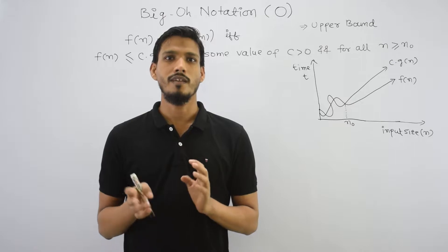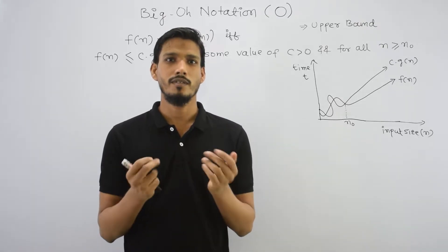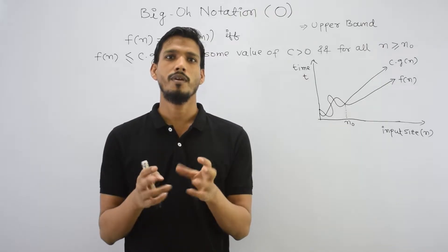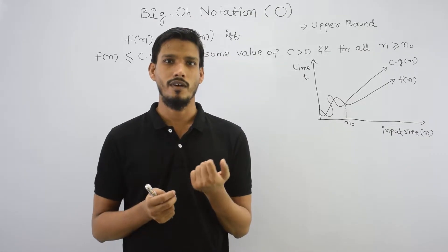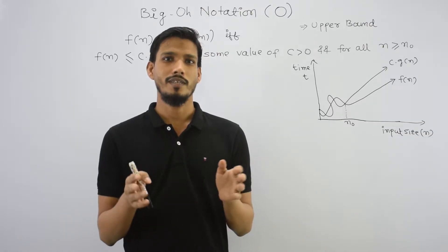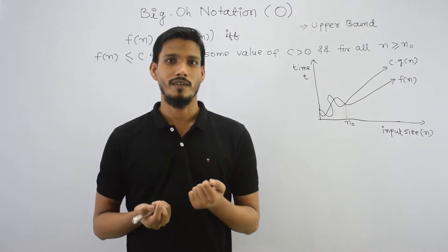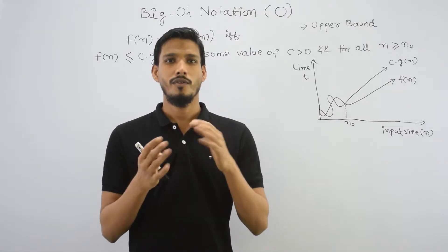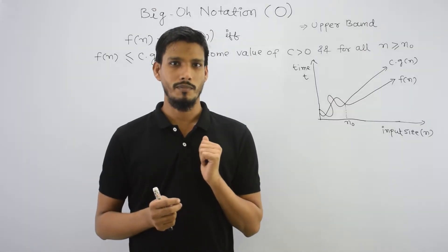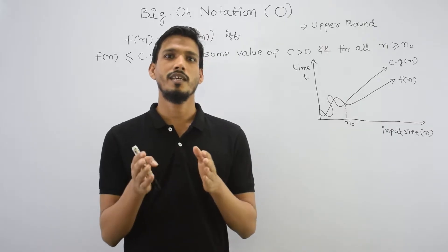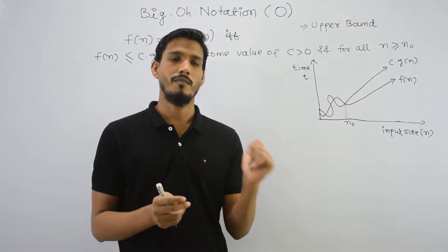There are many confusions about this topic. The first misconception is that Big O means the worst case complexity of an algorithm, Theta means the average case, and Omega means the best case. But actually, it is not like this — it is a misconception. All of these are different properties and we will discuss them one by one.